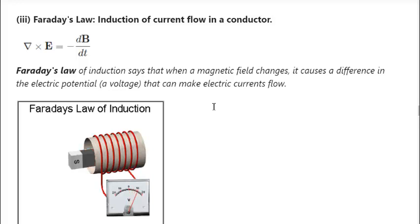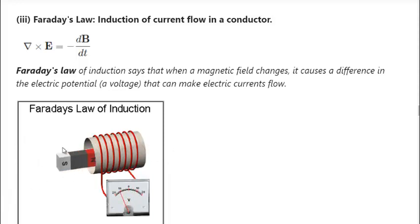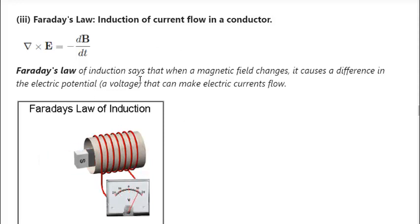Now we have Faraday's law of induction — the induction of current flow in a conductor. Faraday's law says that when a magnetic field changes, it causes a difference in electrical potential, or a voltage, that can make electric currents flow. Here we have a picture of an inductor coil with a magnet being inserted into and out of the coil. The voltage changes depending on whether you're pushing it in or pulling it out. If you push it in and stop, the voltage goes back to zero. Only when the magnet is moving or changing do you get a current in the coil.